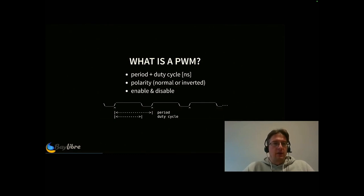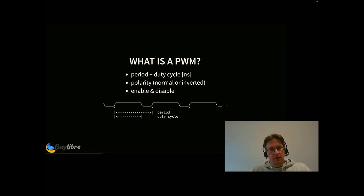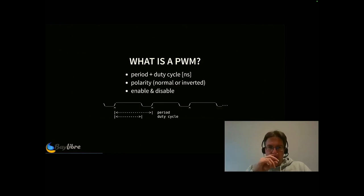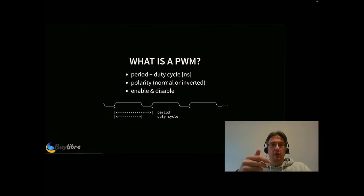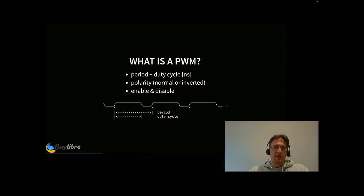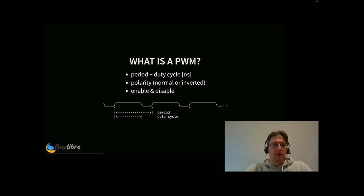During a single period, the duty cycle defines the first phase where the signal is typically high, and during the remainder of the period the signal is low. Once this period is done, it just repeats with these parameters until a reconfiguration happens. There is also a polarity that you can use to invert the signal — I'll come to that on a later slide. And you can enable and disable the hardware unit; if it's enabled it emits this waveform, and if it's not it may or may not give an output, depending on the underlying hardware.